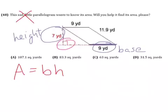This 11.9 over on the side, that is there just to throw us off. We don't need that at all. And up here on the top, that nine yards, that's also our base. In a parallelogram, both the bottom base and the top base will be the same. But we only need one, so we can cross that out.